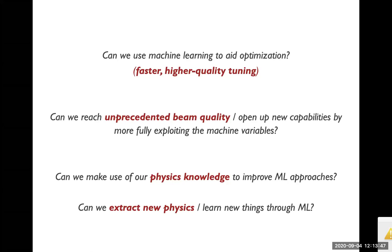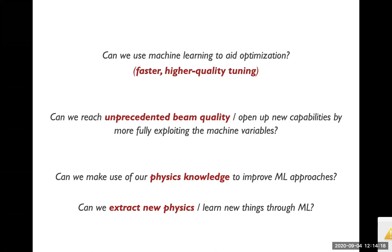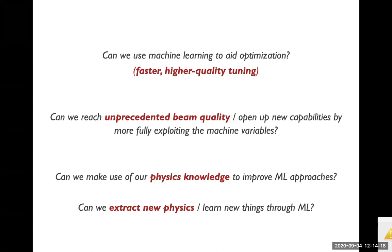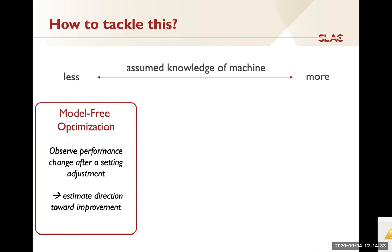The overarching goal combines a few questions: Can we use machine learning to aid optimization for faster but also higher quality tuning? Can this open up new capabilities by pushing machines into operating states we couldn't reach before? Because we have reasonably good physics models in accelerators, can we inject that physics into ML approaches? And conversely, can we use ML to extract new physics information about what's going on in the machine?